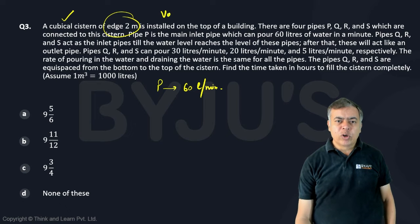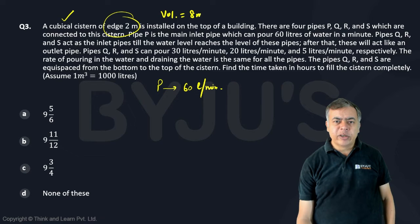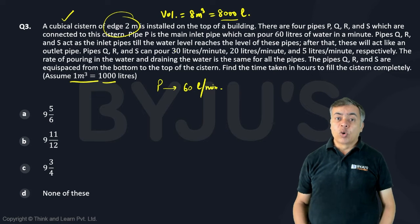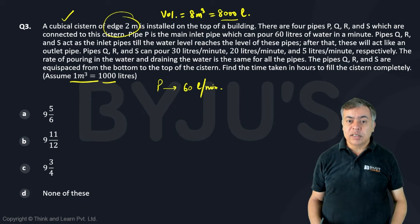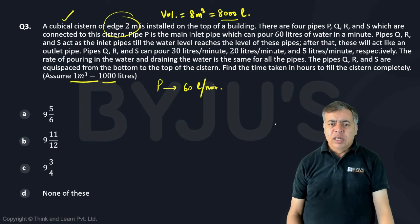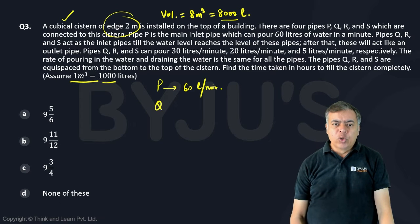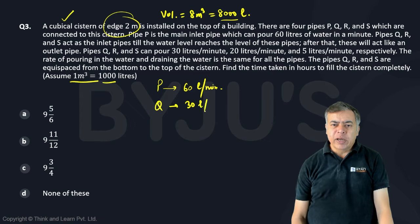So the volume, total volume will be 8 meter cube, which is here given 1 meter cube is 1000 liters. So it is going to be 8000 liters. So total volume of the system is 8000 liters. Now pipe P can fill it in 60 liter per minute, Q can fill it in 30 liter per minute, R can fill 20 liters per minute and S can fill 5 liter per minute.